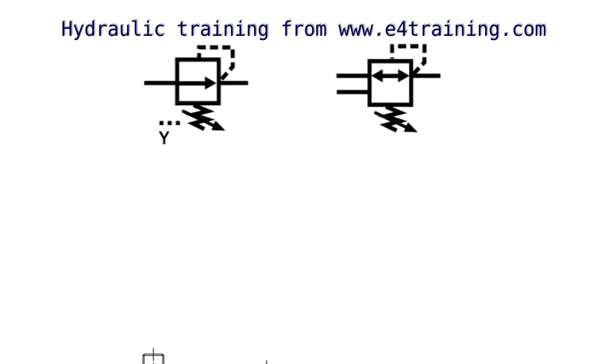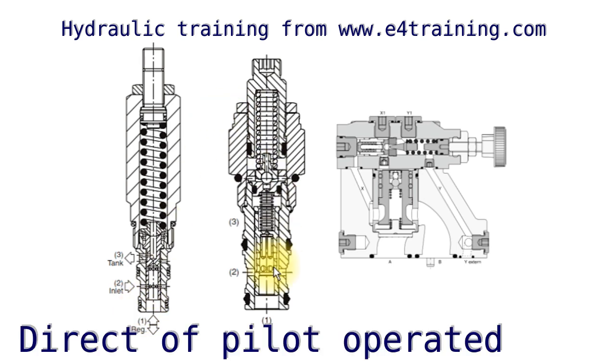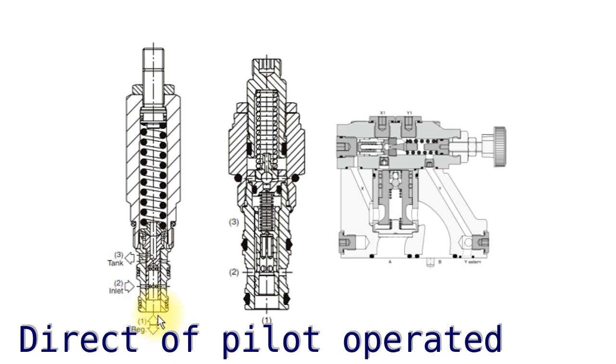Let's look at a couple of designs: cartridge designs, common as usual, or the CETOP platen mounted. This version is direct operated, so we can see the control pressure here is working directly against the spring, so it's called a direct operated valve.